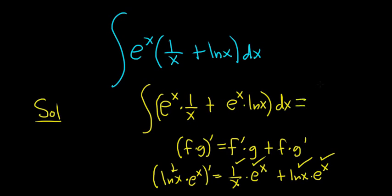So this whole thing here is equal to the integral of (ln x times e^x)' dx. We're anti-differentiating a derivative, so when you do that, the derivative goes away and we just get ln x times e^x plus c.